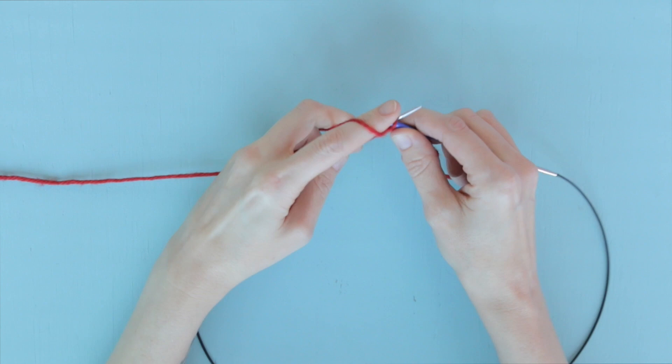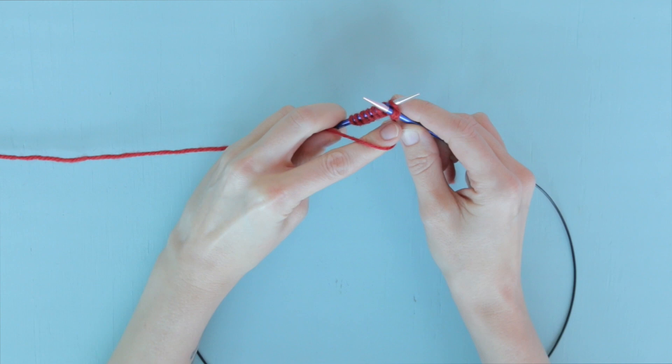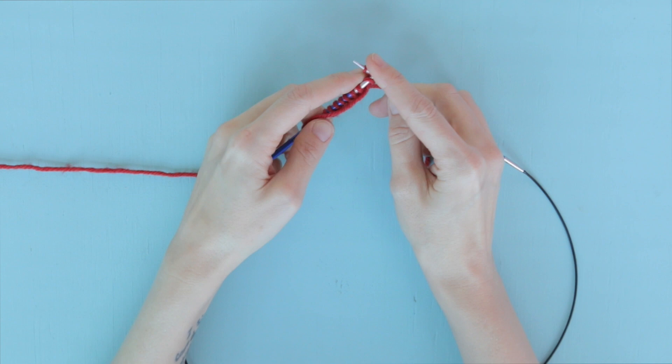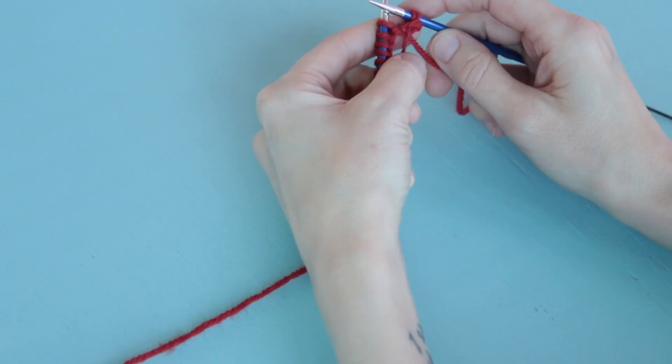Then we draw our working needle back through with both loops and sweep that first stitch off of our non-dominant needle. Let's do that again.